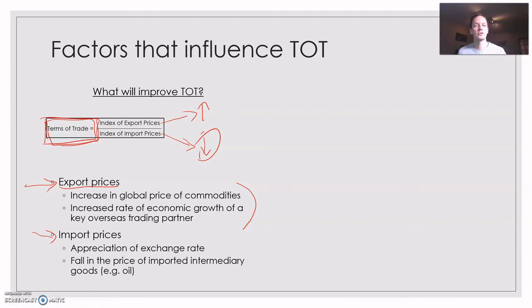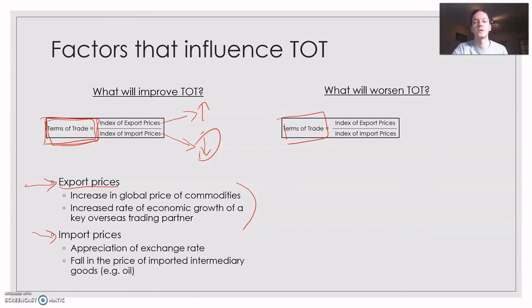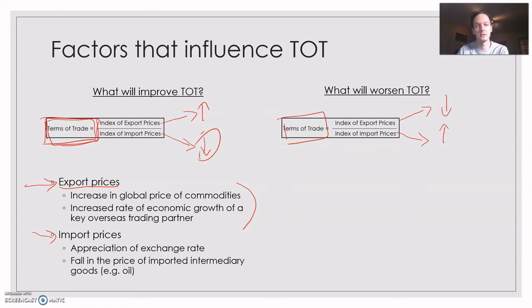So when we look at what will worsen the terms of trade, we've got to again make a bit of a prediction. We want this number to fall and get lower — that's what a worsening of the terms of trade represents. So what's got to happen to export prices for this number to fall? The top number in the equation has to fall, so we're going to see either a decrease in export prices or an increase in import prices.